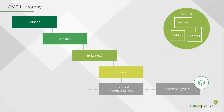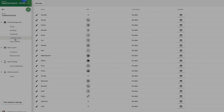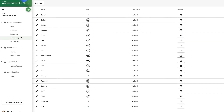All locations are associated with a location type, and inherit the location type's metadata, such as icons and templates. You can think of a location type as a group of locations that share similar characteristics. Example location types include elevators, offices, and storage rooms.